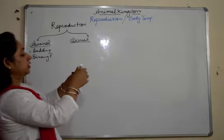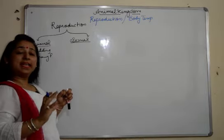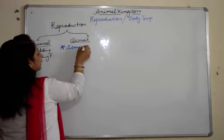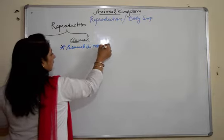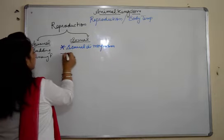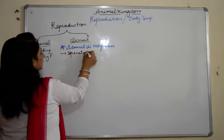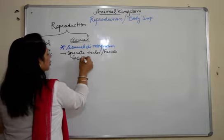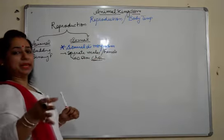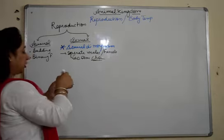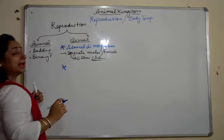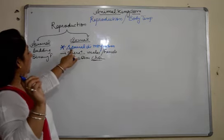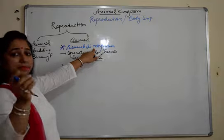When we talk about sexual reproduction, organisms which undergo sexual reproduction show two main features. One is sexual dimorphism — separate males and females that show different secondary sexual characters. They can be easily identified as male and female and they undergo sexual reproduction.